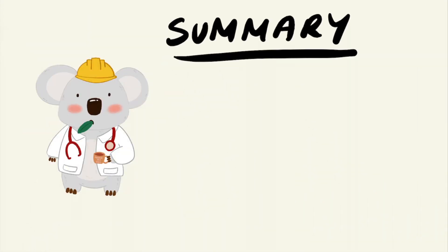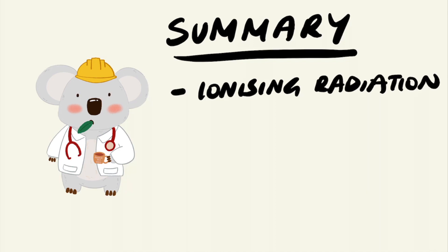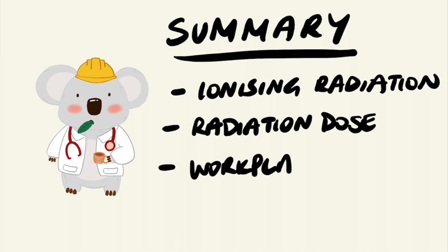So in summary, we went over a brief overview of ionizing radiation. We also talked about radiation dose and potential health effects. And finally, we discussed the types of controls that should be in place to minimize exposure.